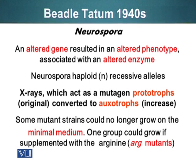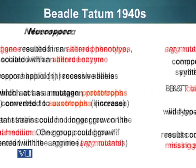Generally, Neurospora can grow on minimal media — that is, minimal amounts of amino acids, carbohydrates, lipids, etc. required for the organism to grow. When X-rays were used to mutate the organism, some mutated Neurospora strains were unable to grow on minimal media and required supplementation. Beadle and Tatum introduced the terms prototrophs — the original eaters — and auxotrophs — the increased eaters. They found that supplementing the media with certain amino acids or chemical compounds allowed the mutants to grow.